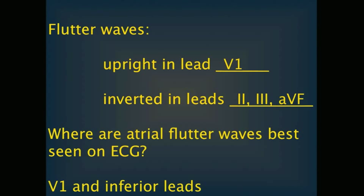In atrial fibrillation, atrial activity is best seen in V1, V2, V3, and the inferior leads — just like atrial flutter. Atrial activity, whether you are looking at atrial fibrillation, atrial flutter, or fib-flutter, is seen best in the inferior leads and V1 to V3.